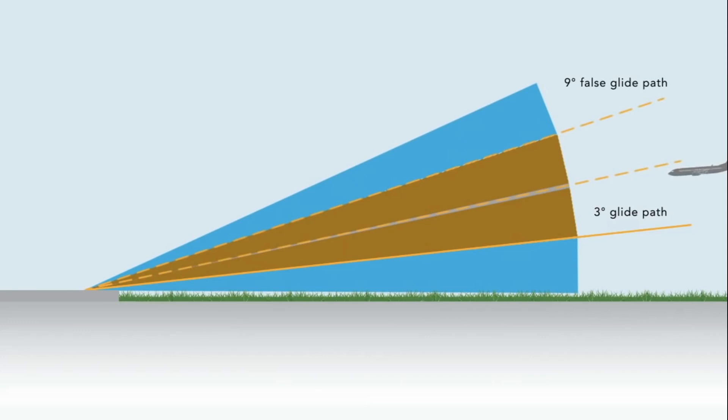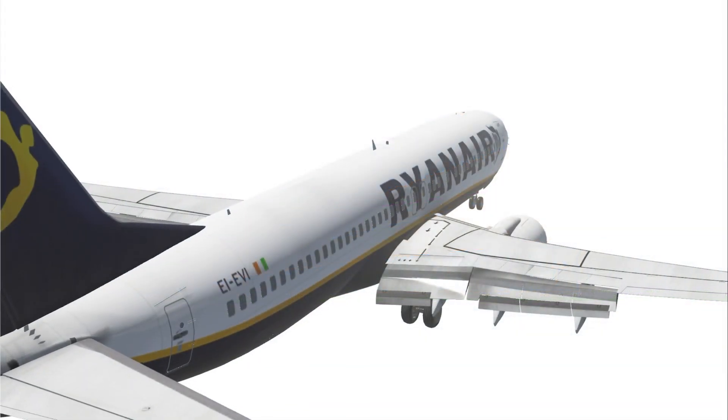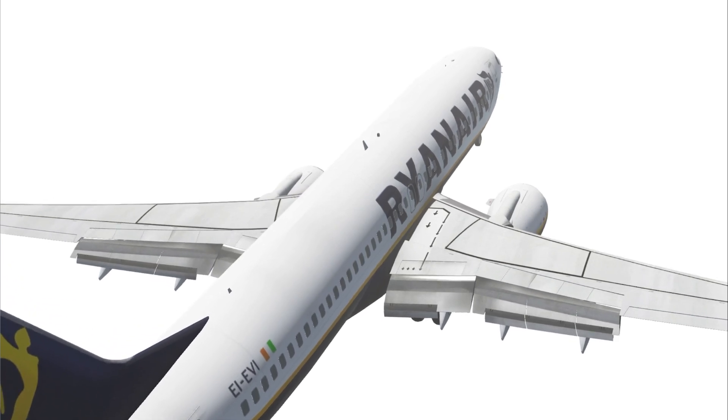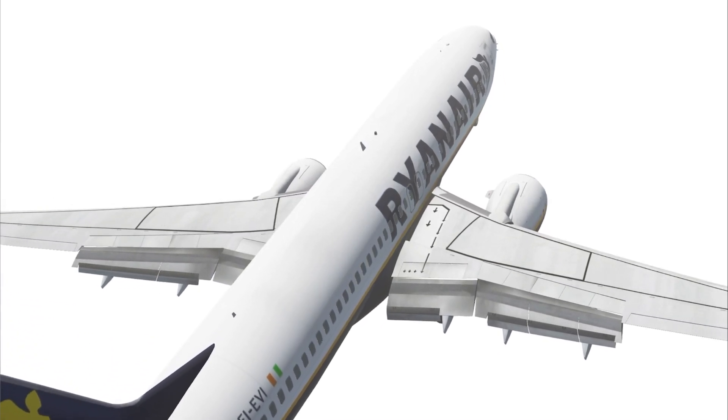This signal reversal leads to a potentially dangerous situation where the aircraft, trying to capture the 3 degree glide path from above, receives a long steady fly down indication that suddenly changes to fast increasing fly up, which is followed by the automatic systems when captured. As a result, the autopilot will raise the nose leading to a loss of airspeed, which can lead to an approach to stall condition.